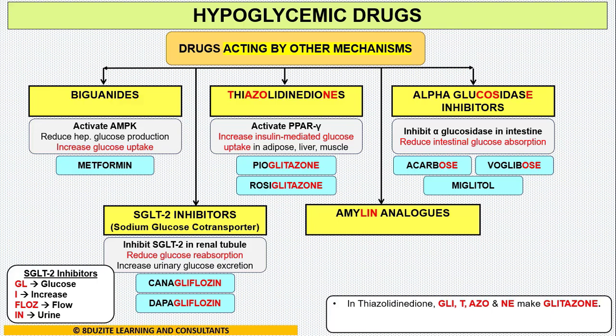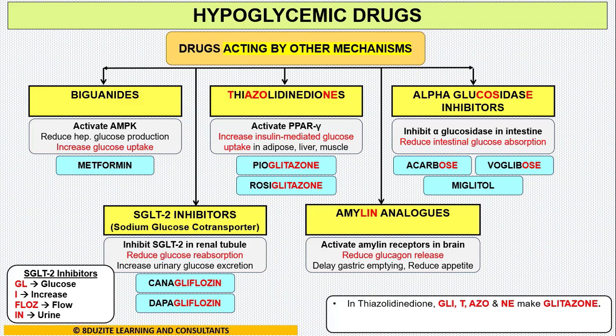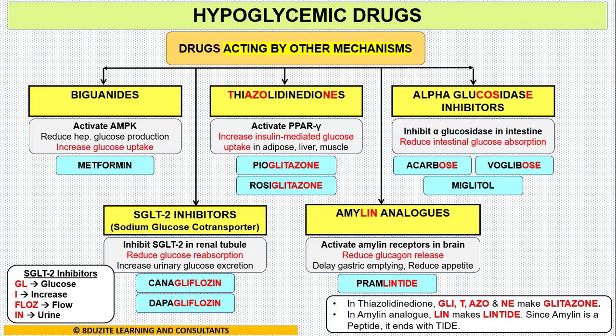Last, we have amylin analog. These drugs activate amylin receptors in the brain, reduce glucagon release, and delay gastric emptying. We have only one drug here: pramlintide. If you observe, it contains L-I-N, and since it is a peptide, it ends with the letters T-I-D-E, making it pramlintide.